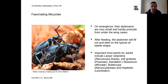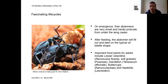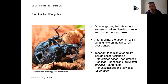Once adults have emerged, the food plants they eat include lesser celandine, soft grasses, dandelions, buttercups and hawk bits, though there's still a lot to be learned about adult diet. After feeding, they start looking for mates. Courtship and mating then begin, as shown in an image of a mating pair of violet oil beetles.